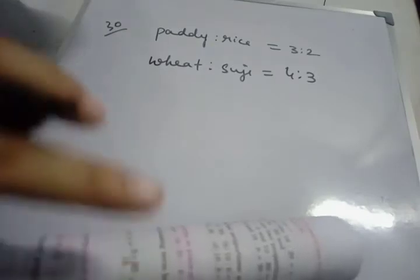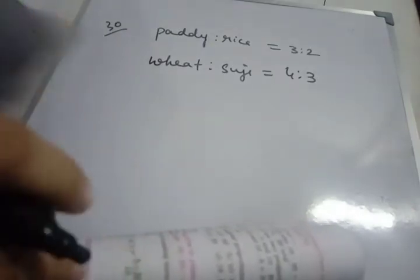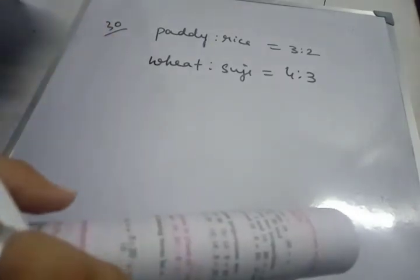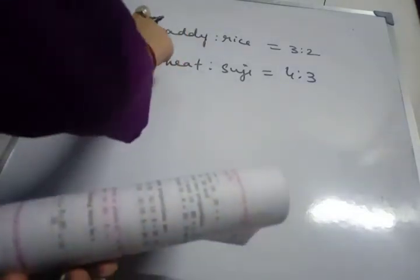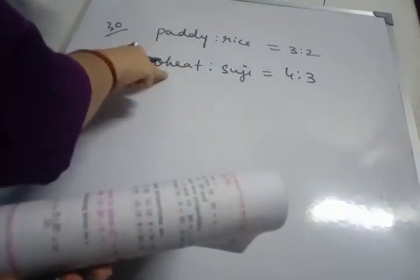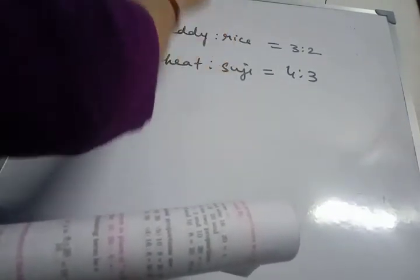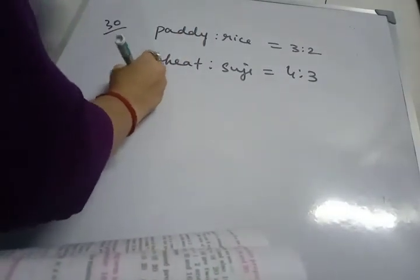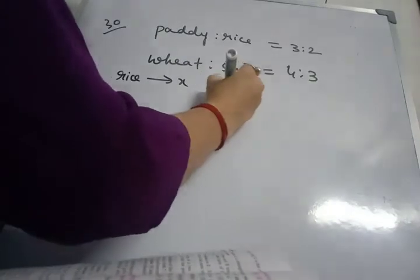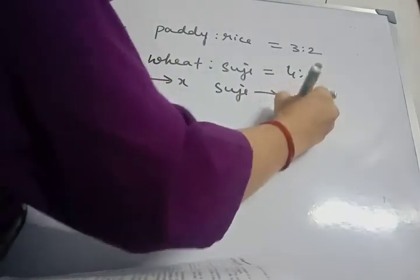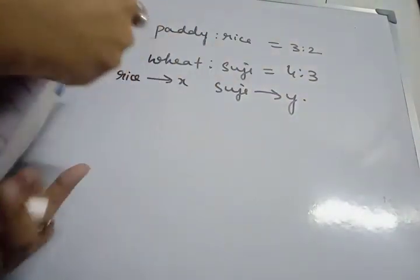Find the ratio between the rice and suji obtained from 100 kg of paddy and same quantity of wheat. That means the total quantity of paddy and wheat is equal to 100 kg. Now we have to find out the ratio of rice and suji. So rice be x and suji by y.